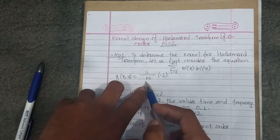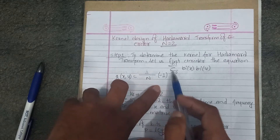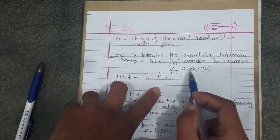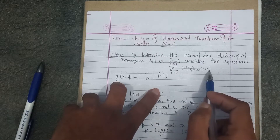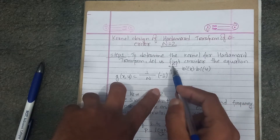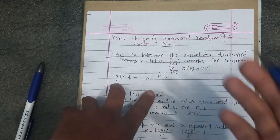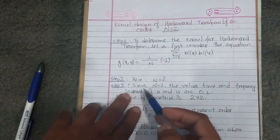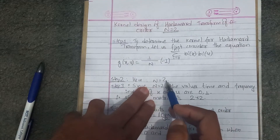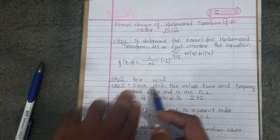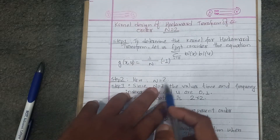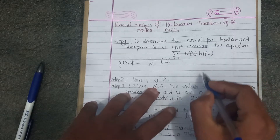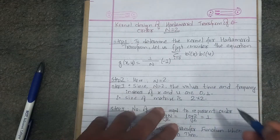G(x, u) equals 1 over n minus 1, times b_i of x times b_i of u, where b_i of u is the required number of bits. This is order 2. Now u ranges from 0 to n minus 1.